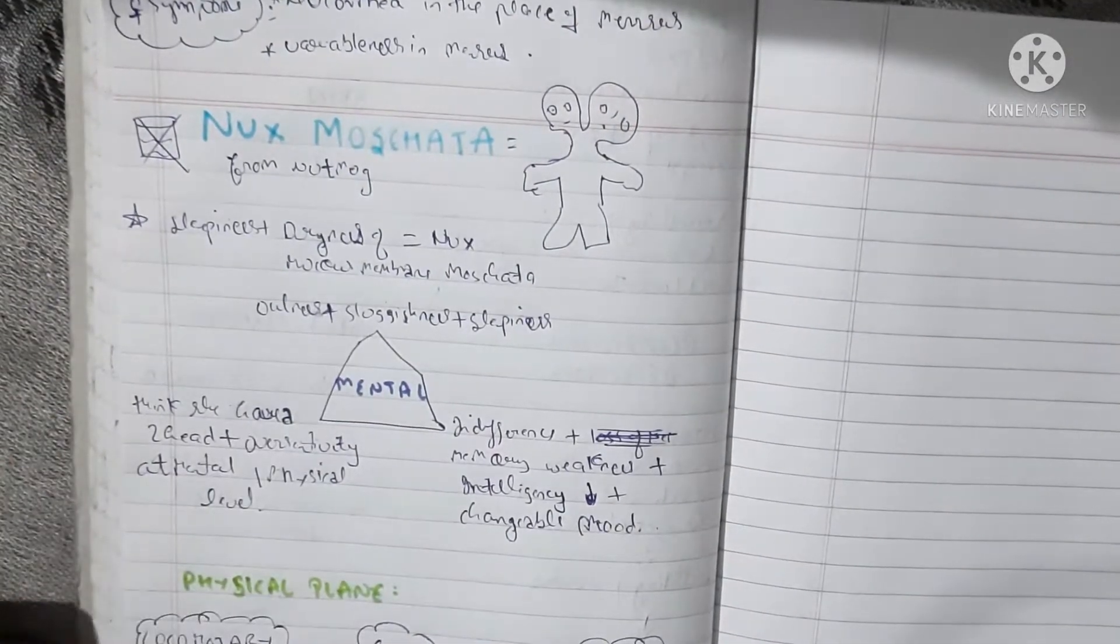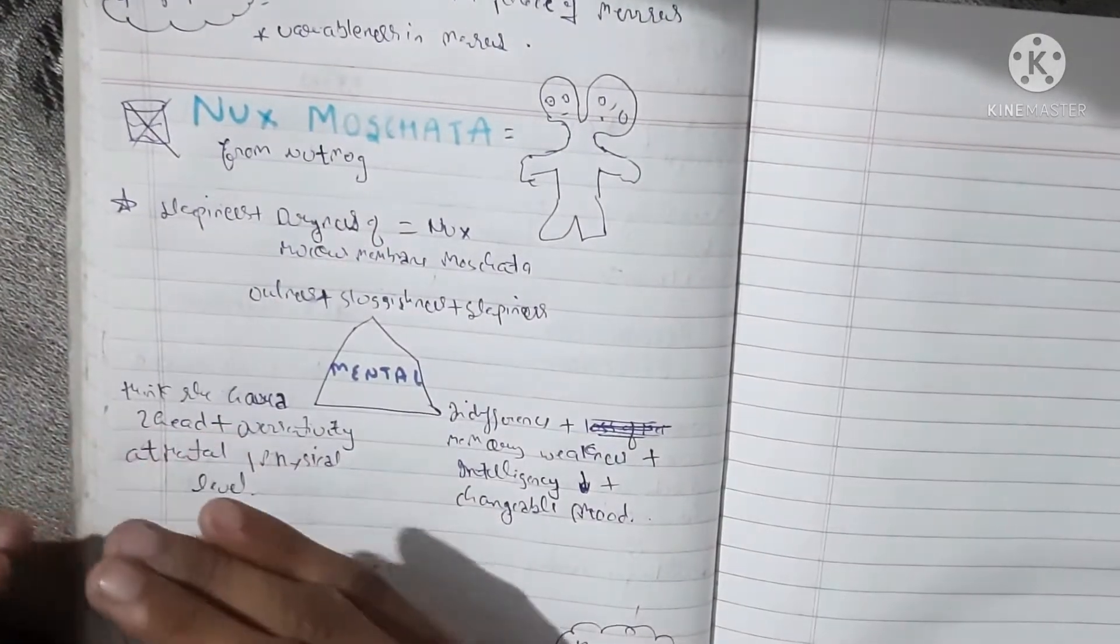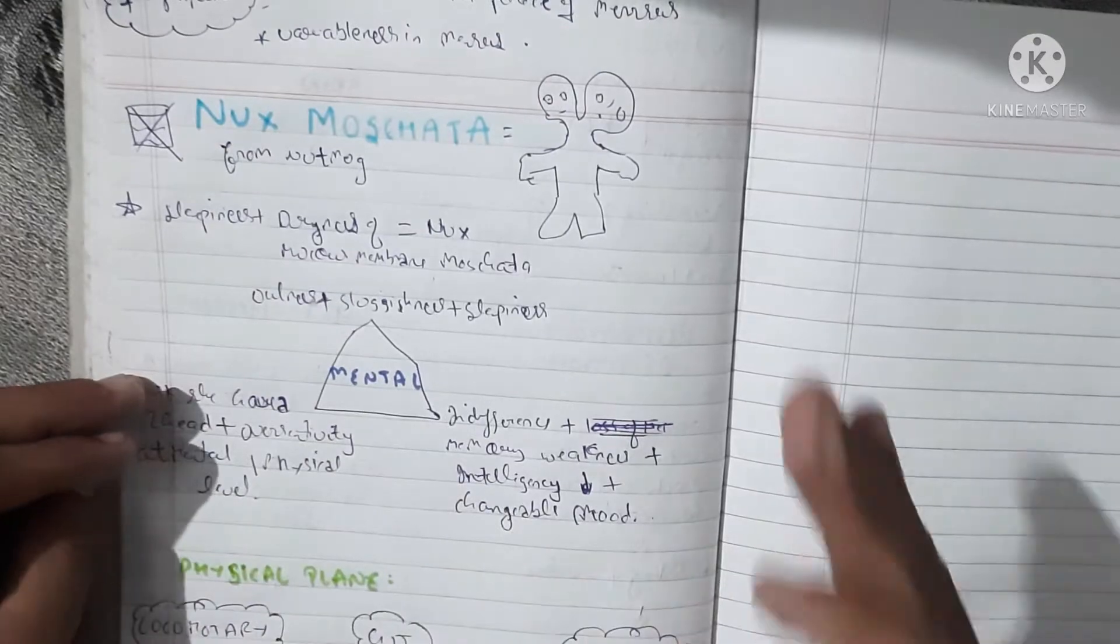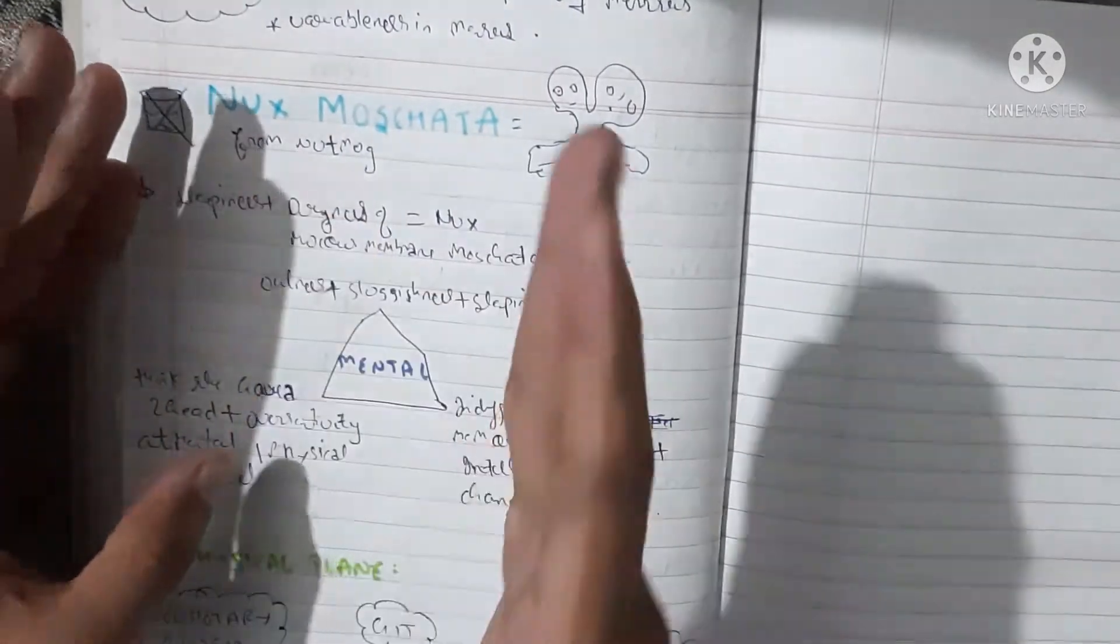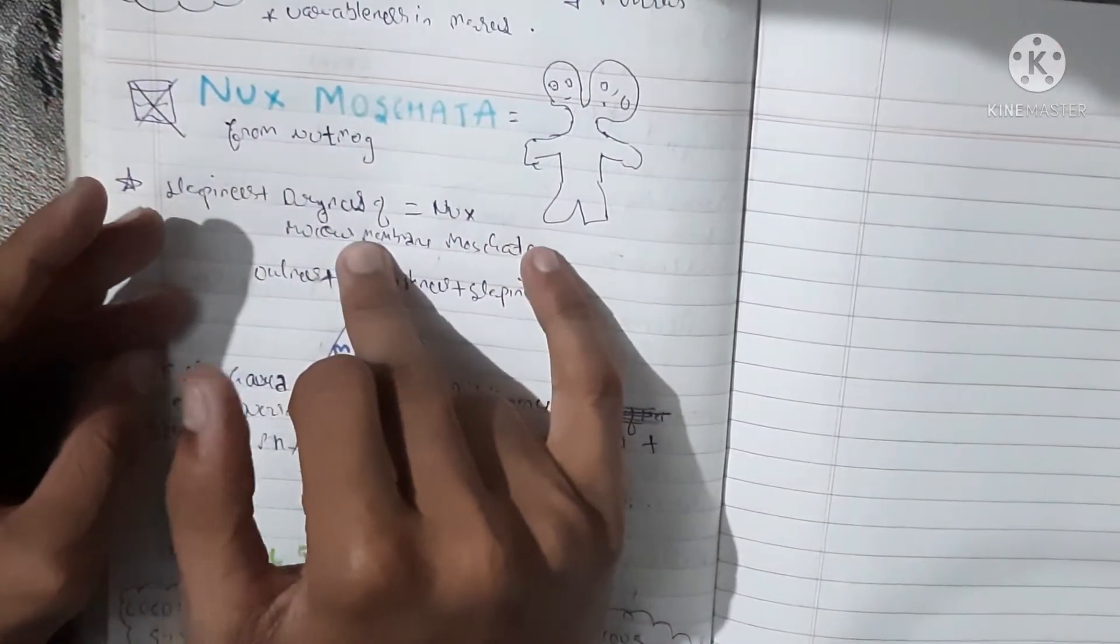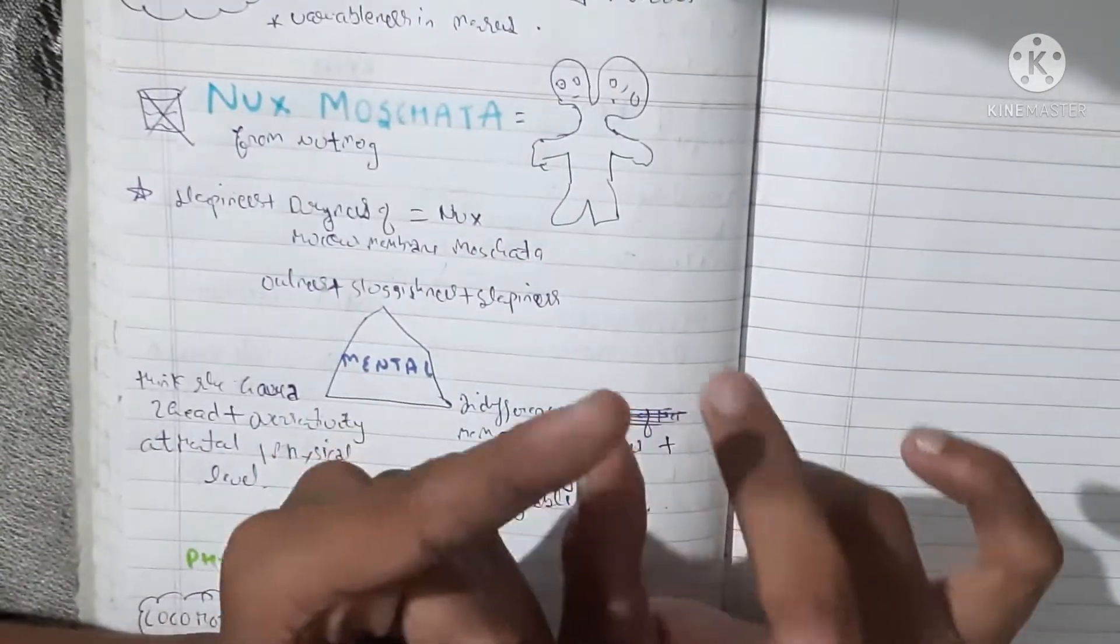The key feature is that its sleepiness is attendant with dryness. With sleepiness we will see collaterally dryness in mucous membranes. If sleepiness with respiratory problem or due to respiratory problem, then antimonium tartaricum.